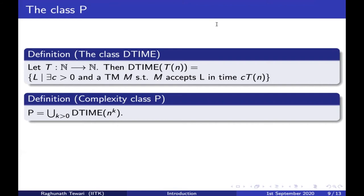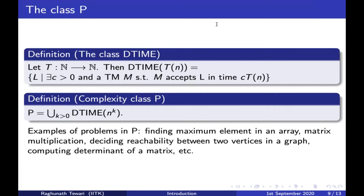DTIME(t(n)) is the class of all languages for which there is a machine that can decide that language in O(t(n)) time. Using this definition, I can define the class P as the union over all k ≥ 0 of DTIME(n^k). Most of the problems you have seen so far — finding the maximum element in an array, matrix multiplication, deciding reachability between two vertices in a graph, DFS, BFS, computing the determinant of a matrix — are actually problems in P.